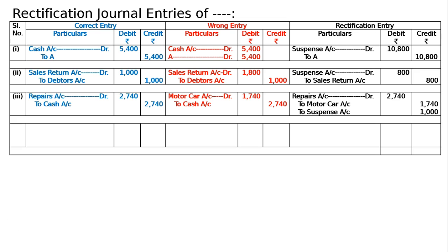Motor car account debited will go — it will be nullified, to motor car account Rs. 1740. Though all other things are correct, the difference will go to suspense account Rs. 1000.